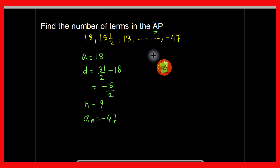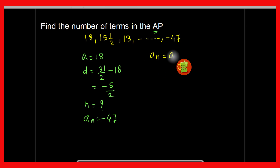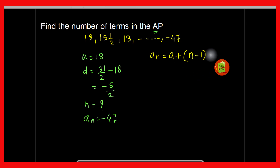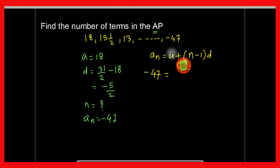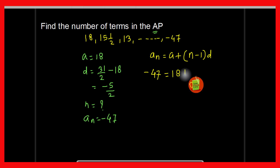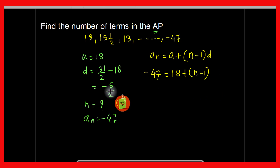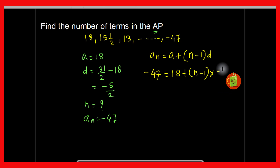Now friends, since you know the formula: an is equal to a plus n minus 1 into d. So here an is given as minus 47, so it will be minus 47 equals a, that is 18, plus n minus 1 into d, which is minus 5 by 2.